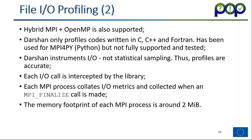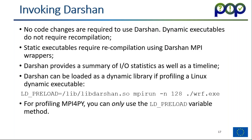During your MPI application execution, each MPI process collects individual I/O metrics and they're collected when MPI_Finalize is called. A single MPI process then gathers all the trace data and creates a trace file. The memory footprint of each MPI process is around two megabytes. To invoke Darshan, you don't need to make any code changes — dynamic executables don't even need to be recompiled. However, static executables need to be recompiled using Darshan MPI wrappers. Darshan provides a summary of I/O statistics as well as a timeline.